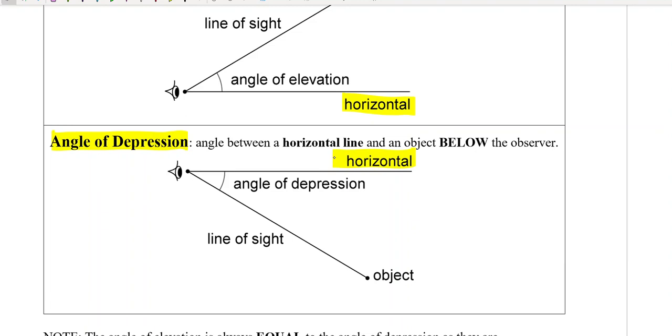Whereas an angle of depression, again you start with your horizontal line, but an angle of depression goes down. Now the good news for you guys is that on your test, and even most of the ones in your exercise, you are going to be given the diagram this year.